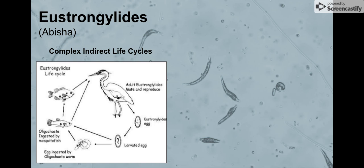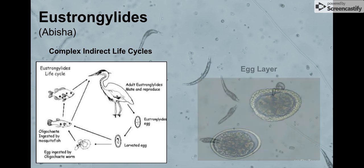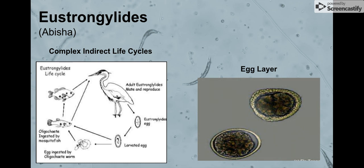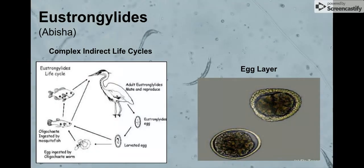That looks like a grey heron or some heron or something. It is also important to note that, as previously stated, these lay eggs. They're not ovoviviparous or viviparous, meaning they don't give live birth.